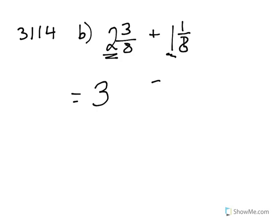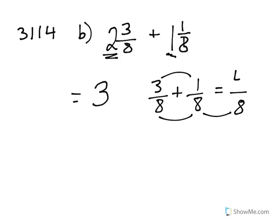And then we do the 3/8 plus 1/8. The denominators are the same, so it's really easy. That stays the same number down here. And then we do 3 plus 1 equals 4, which can be simplified by dividing both top and bottom by 4 into a half. So the answer to 2 3/8 plus 1 1/8 is 3 and a half.